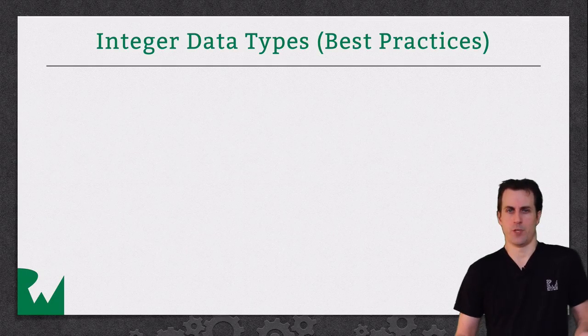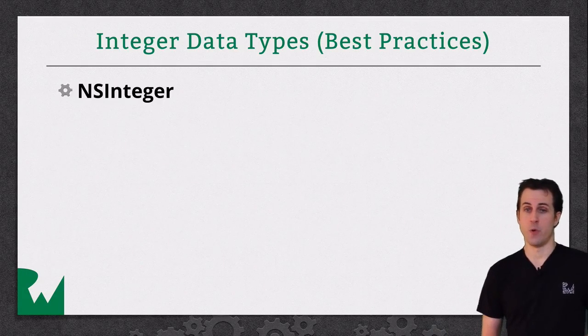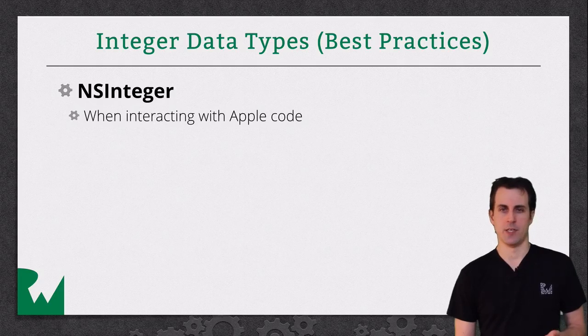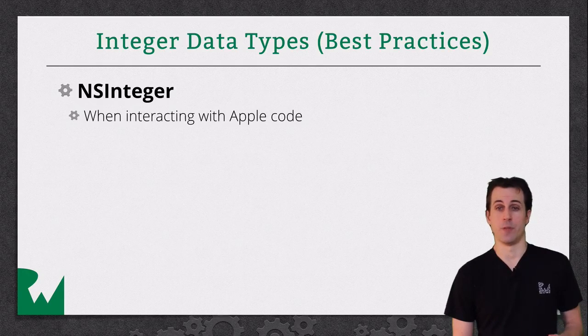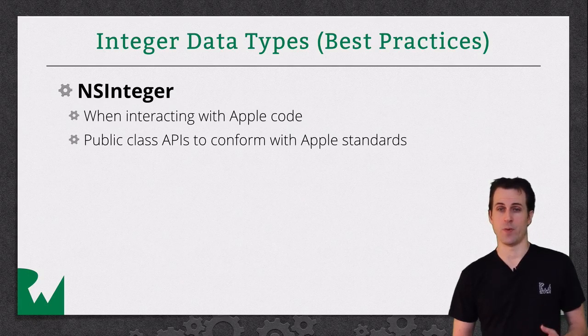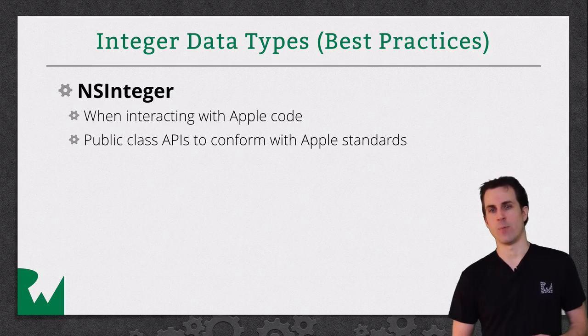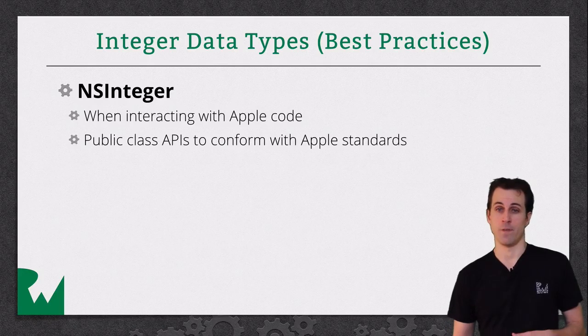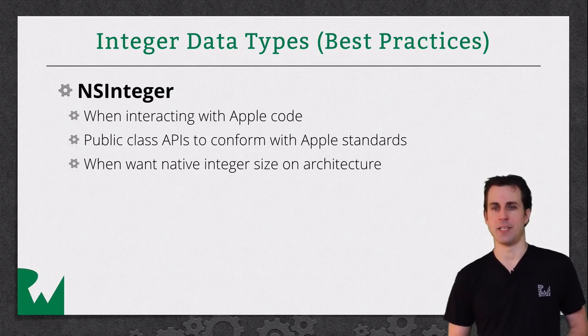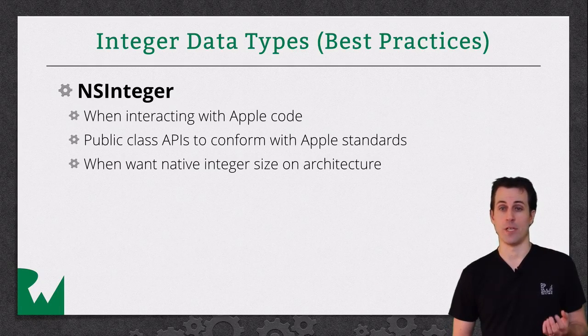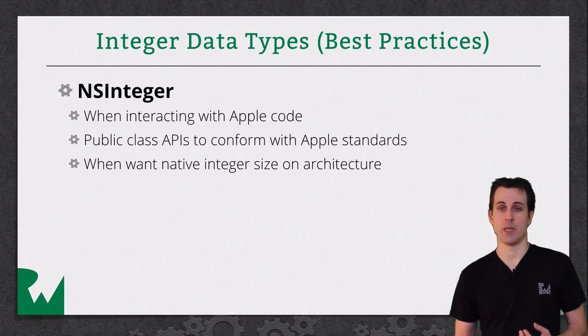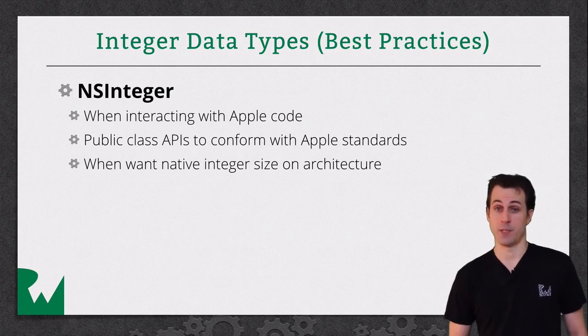So we've looked at a lot of data types. You might wonder, which should I use and when? There's good reasons to use both of them. Let's start with NSInteger. First, if you're interacting with Apple code, that's a good reason to use NSInteger. If it takes NSInteger as a parameter, you might as well have a local variable that's also NSInteger. Second, if you want to make APIs that conform to Apple standards, that's another good reason. For example, maybe you're making an open source iOS library and want it to look like regular Apple code. Next, sometimes you just want the native size for an integer on that architecture. 32-bit OSs work efficiently with 32-bit integers, 64-bit OSs work efficiently with 64-bit integers.